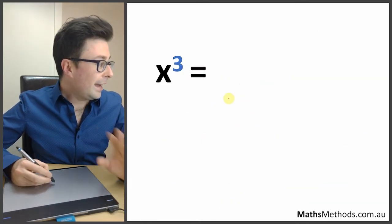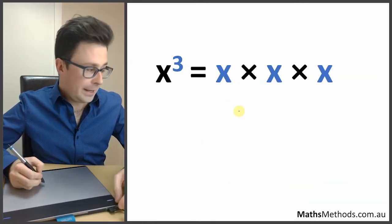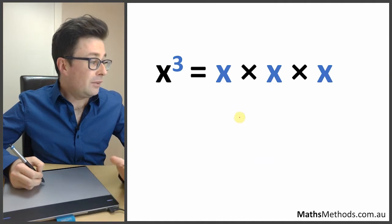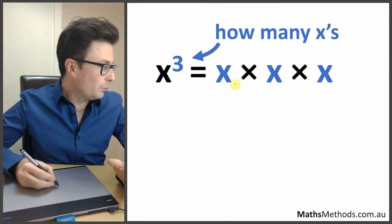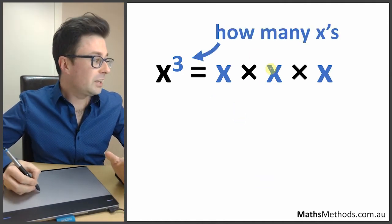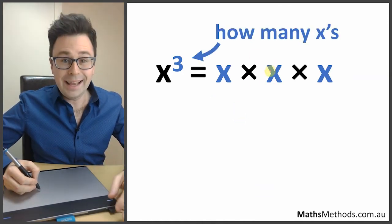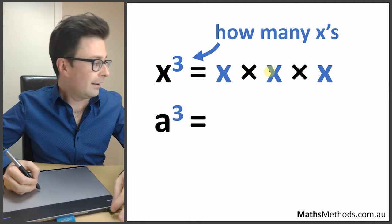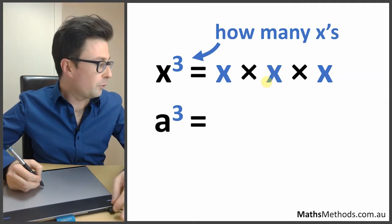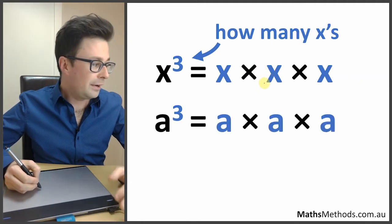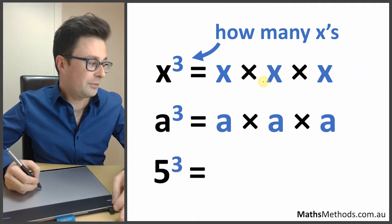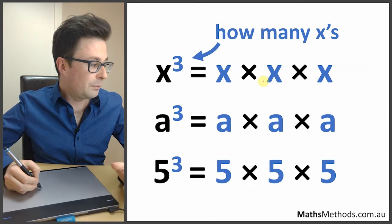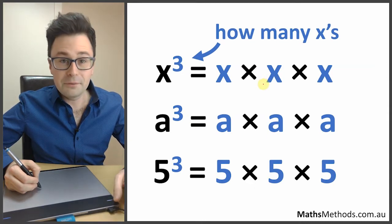So x to the power of 3 means that we've got 3 x's. That little number literally tells you how many x's there are. It wouldn't matter if it was a to the power of 3 — that would mean 3 a's — and 5 to the power of 3 would mean 3 fives.